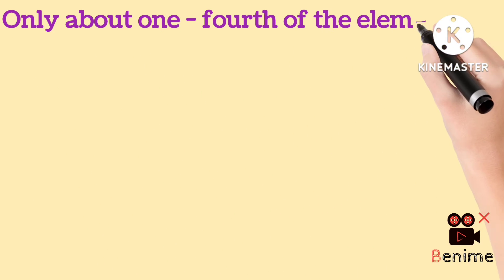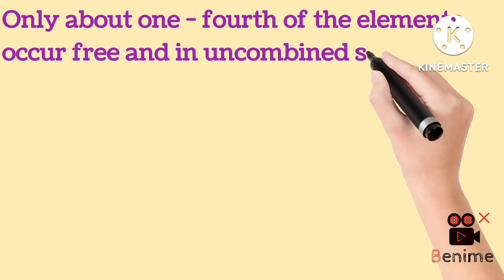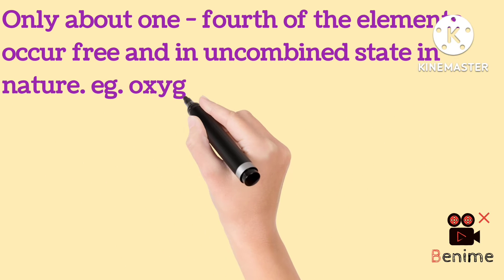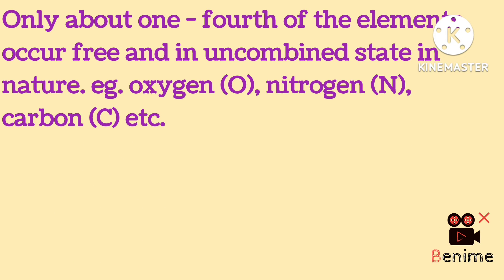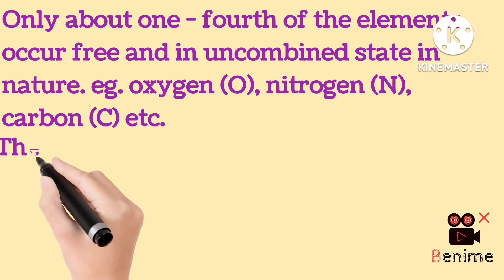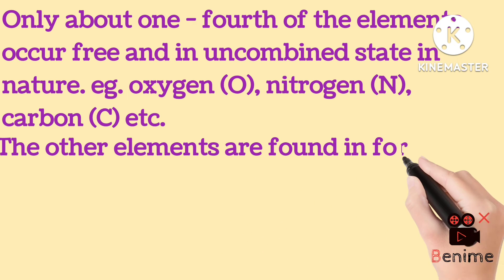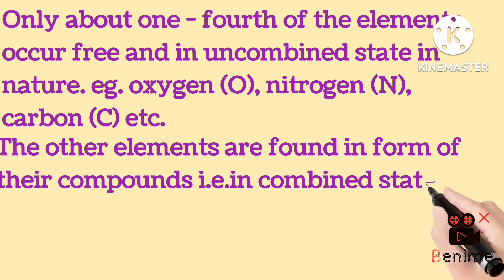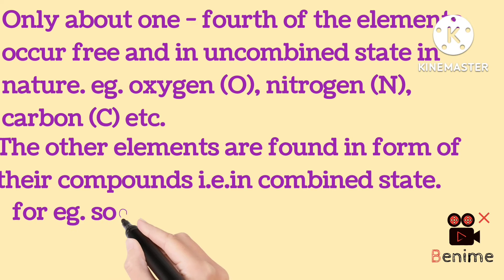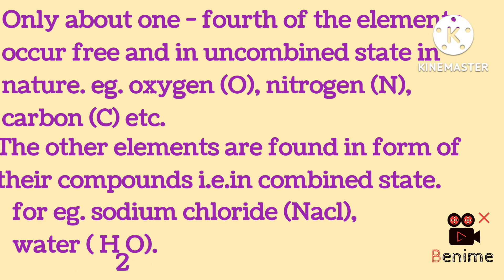Only about one-fourth of the elements occur in free and uncombined state in nature, like oxygen, nitrogen, carbon, etc. The other elements are found in the form of their compounds, that is in combined state. For example, sodium chloride and water.